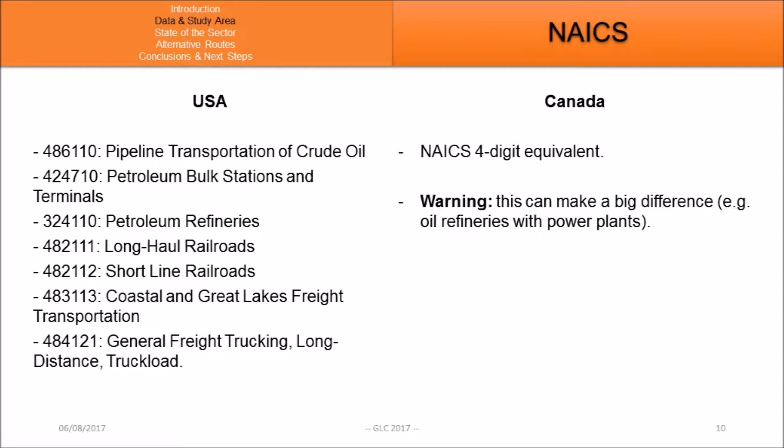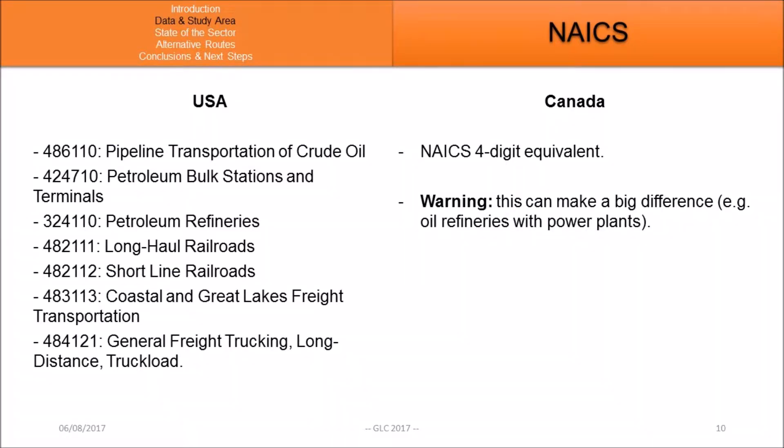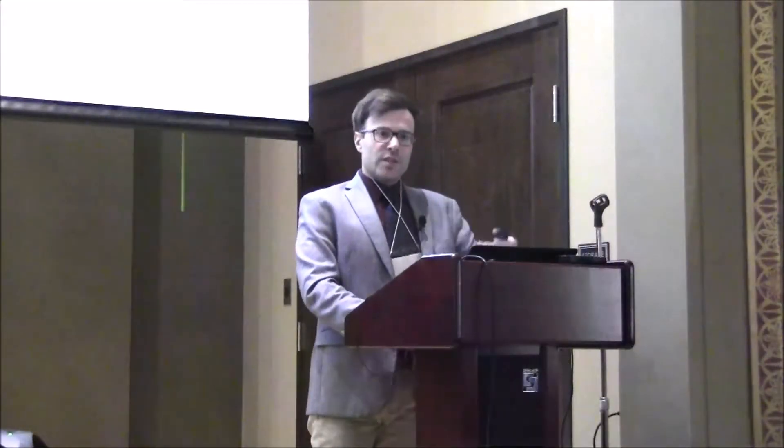When I talk about these sectors, the crude oil transportation sector is composed of industries defined using NAICS codes — the North American Industry Classification System. For Canada, it's a four-digit equivalent, which creates an immediate difference: at the four-digit level, refineries are grouped together with coal power plants and other power plants, making my sector appear bigger. In the United States, we selected specific NAICS codes equivalent to these industries. This choice was arbitrary but based on all previous studies we reviewed — they are generally accepted as part of the crude oil transportation sector.